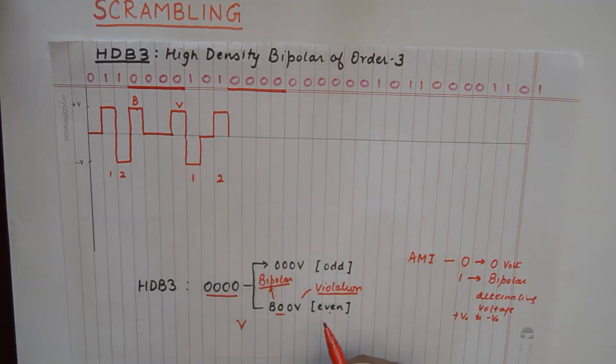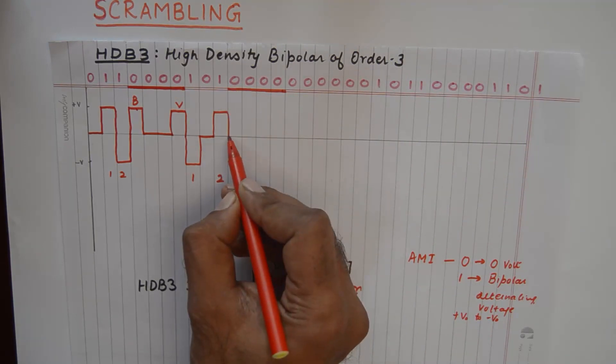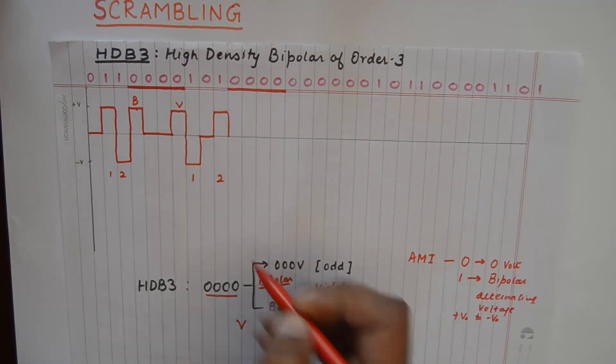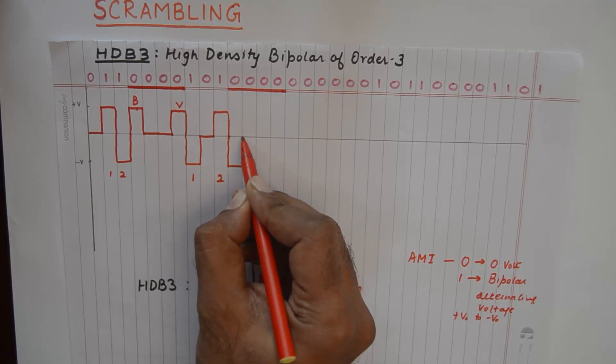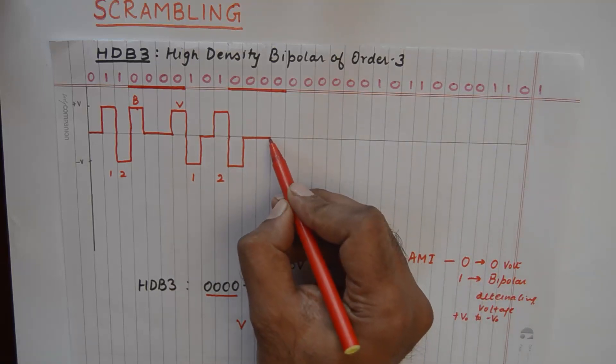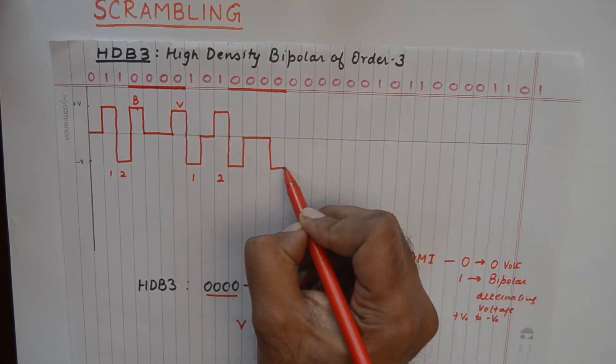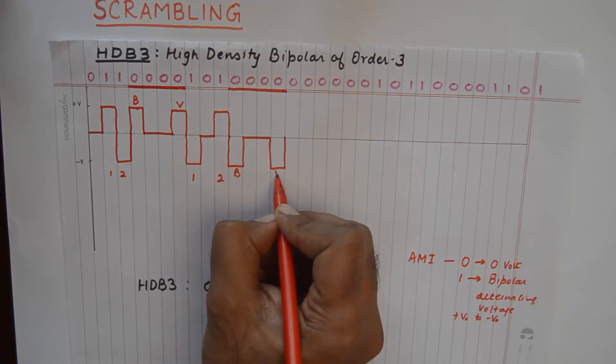So again, this is a case of even. So the first zero will be a normal bipolar transition. Then we have two zeros and then a violation. So this is B and this is V.